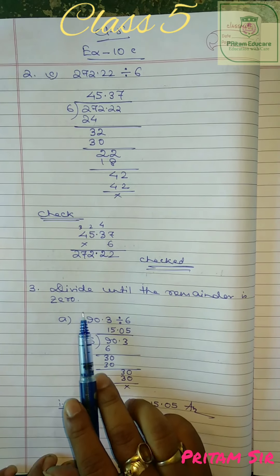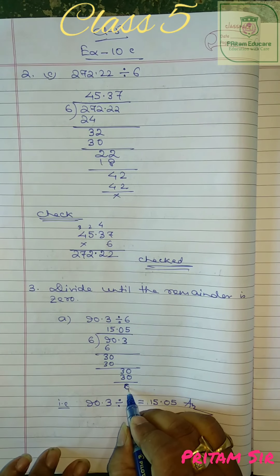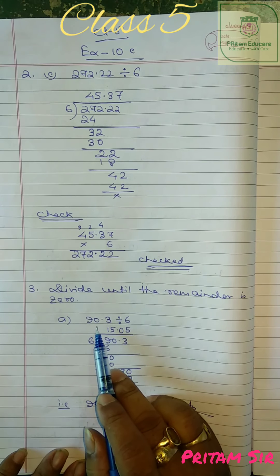So 22, 2, 2, 2 carry, 5 into 6 is 30 plus 2 is 32, so 3 carry, 3, 4 into 6 is 24, 25, 26, 27. 272.22 is the answer.